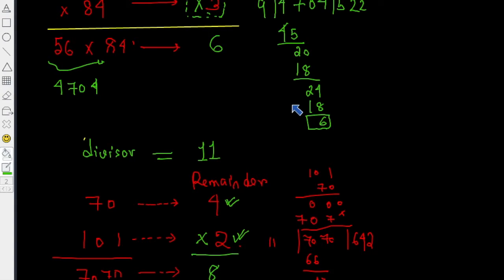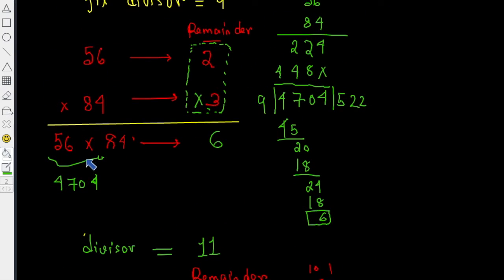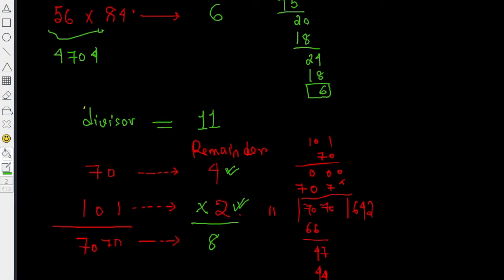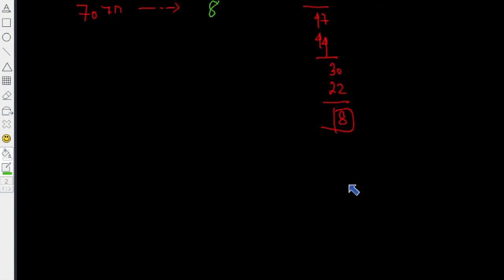If this is actually a rule, if this always works, then all our calculations will get very much simplified. Because when I wanted to find the remainder of 56 times 84, I had to first multiply 56 and 84 and then divide by 9. But if I knew this rule, I would have simply multiplied 2 and 3 to get the final remainder. It's a convenient rule — if it's true. We've only worked with two examples and don't know yet if this always holds.